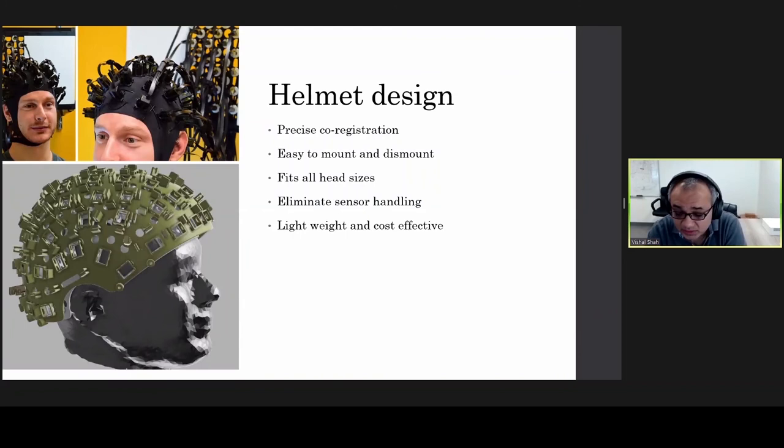Another key aspect of the technology that we, and also a number of other research groups, really are working on, is developing an advanced OPM helmet. And this OPM helmet, it really needs to meet several criteria. For example, the helmet has to provide precise coregistration data, which is where the sensors are placed with respect to the head. It should be very easy to mount and dismount, so that the subject preparation is almost non-existent. It should fit all head sizes, so that you can scan not just adults, but also children of any age. Hopefully it eliminates all kinds of sensor handling, to improve the system longevity. And the helmet should be very lightweight and should be cost effective.